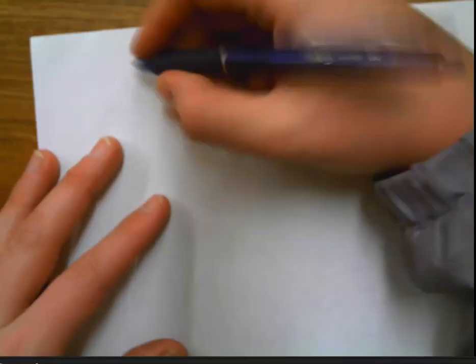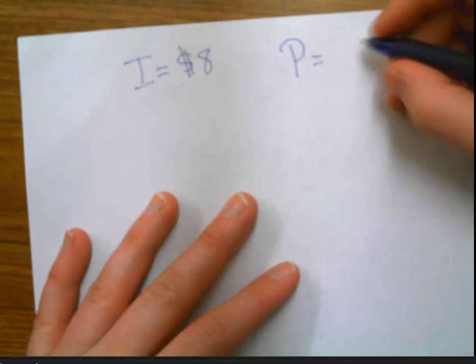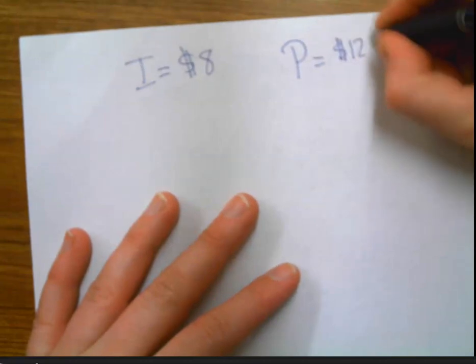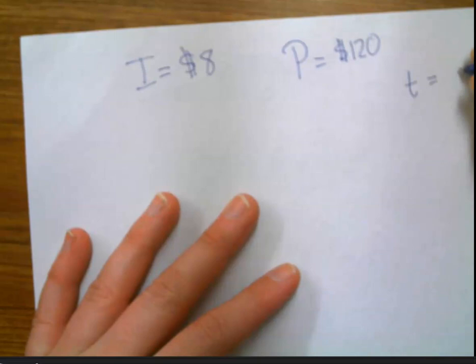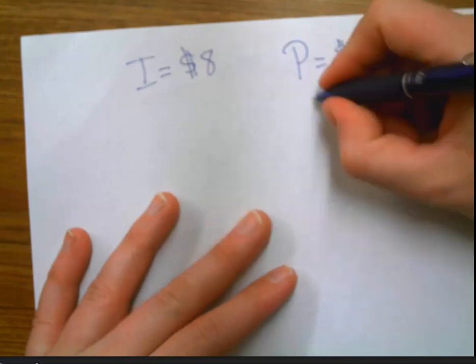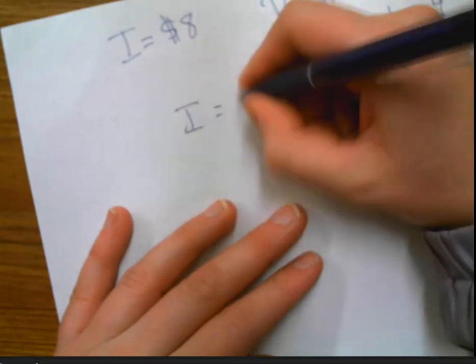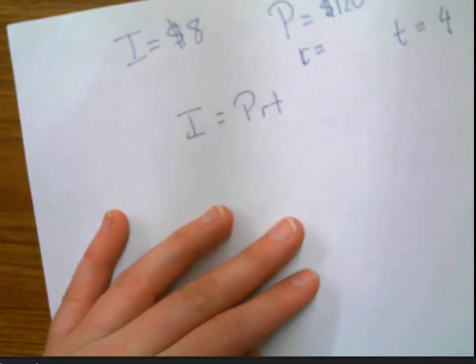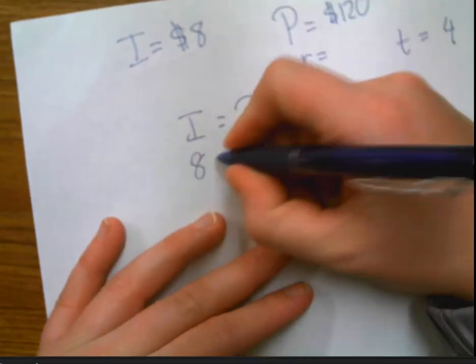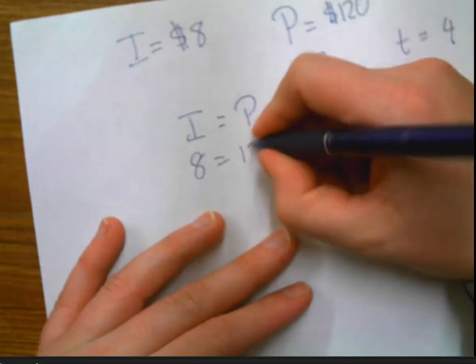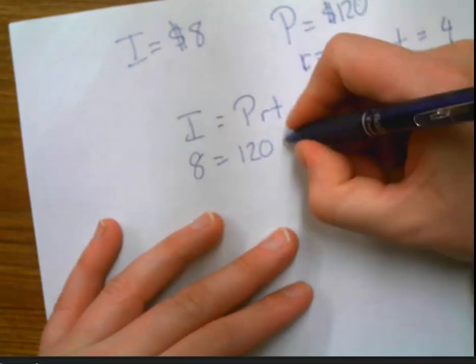It's the same thing for rate or time. So if I know that my interest is $8 and my principal is $120 and my time is four years, but I don't know what the interest rate is. I don't know what my R is. So I would say I equals PRT, and I would plug in the I as $8, plug in the principal of $120. I don't know what the rate is, so I'm just going to leave that as R, but time is four.